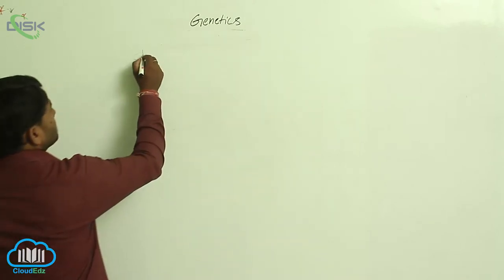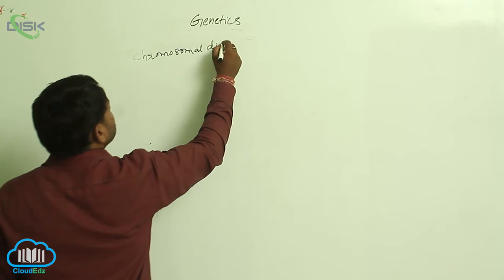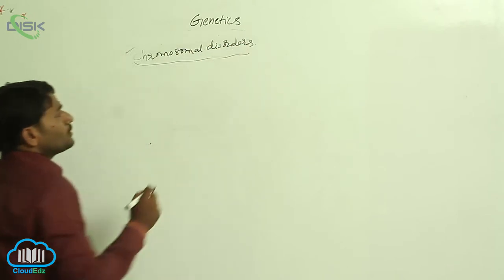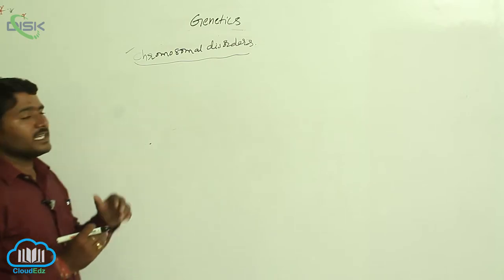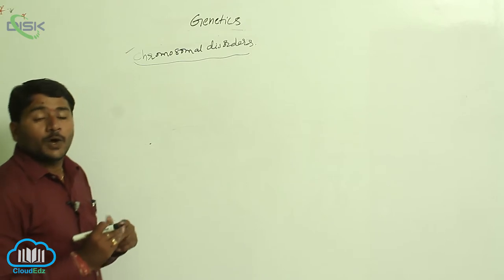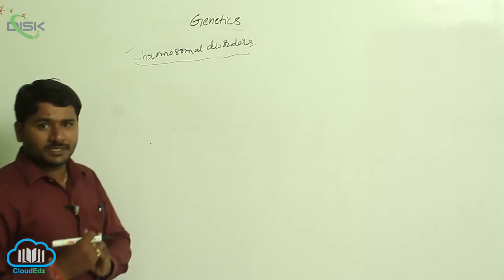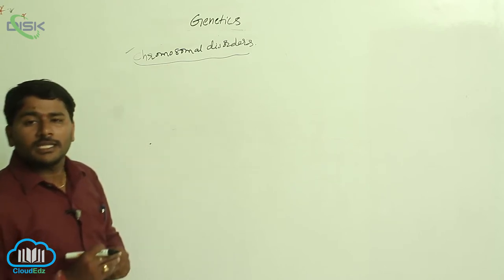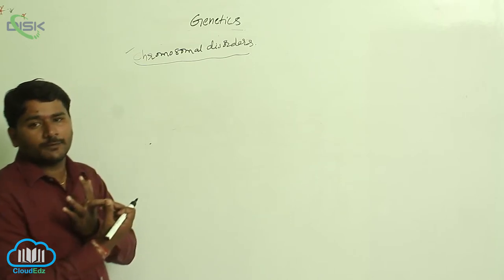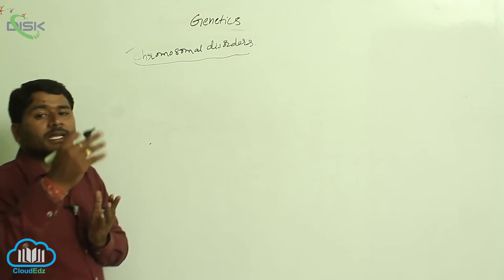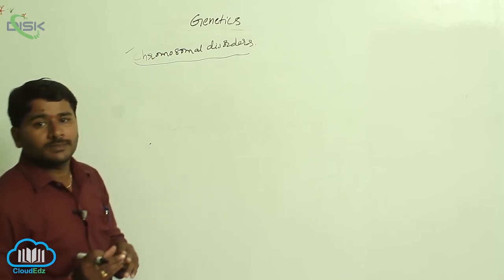Now let us see chromosomal disorders. Chromosomal disorders are disorders seen in individuals due to one extra chromosome, loss of one chromosome, or damage to a small part of a chromosome. Addition or deletion of one chromosome is called aneuploidy.